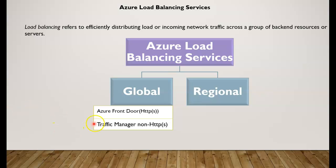Azure Front Door is an application delivery network that provides global load balancing. It accelerates services for web applications by working at layer 7 capabilities. Features like SSL offload, path-based routing, fast failover, and caching can all be used within Azure Front Door, which improves performance and high availability of your applications.